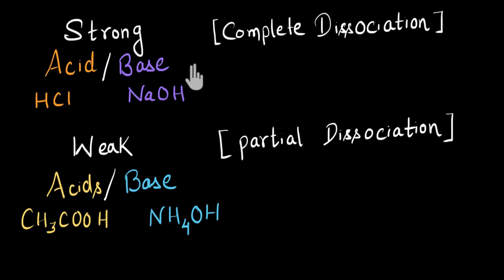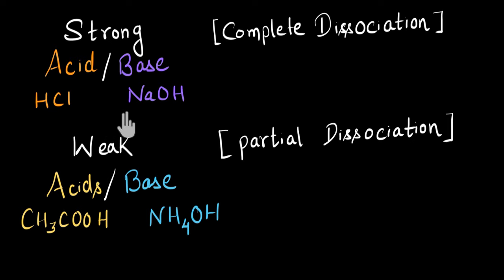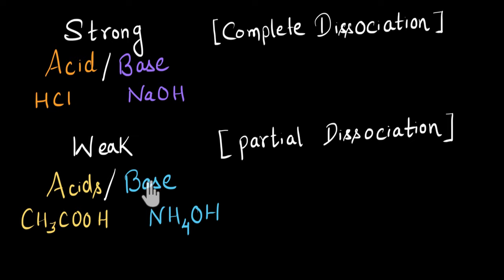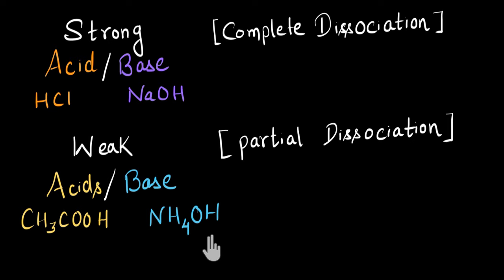To summarize the video: strong acids and bases undergo complete dissociation, meaning all their molecules dissociate to give us ions — H+ ions and OH− ions — so we get a lot of them. Whereas weak acids and bases undergo partial dissociation, meaning only a few of their molecules dissociate to give us H+ ions and OH− ions, so we have very few of them. We also looked at examples of each.